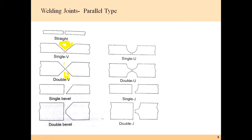For the single bevel weld joint, one element is parallel or perpendicular to the ground and one element has a slight edge — this is a straight bevel. The double bevel resembles the letter K: one side is parallel and both sides have a bevel. Then there is the single U, where a U shape is formed at the end of the two elements; for the double U, the U is formed on both sides. Similarly, single J and double J joints are also available. These are the parallel type weld symbols.